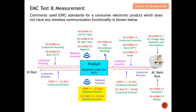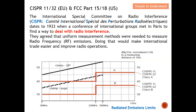The International Special Committee on Radio Interference is called CISPR. This is the English name — it is actually a French name, which is how they get the acronym C-I-S-P-R. CISPR dates back to 1933, when a conference was held consisting of international groups that met in Paris. That is why it is a French word, formed to find a way to deal with radio interference.